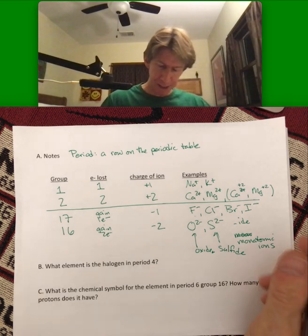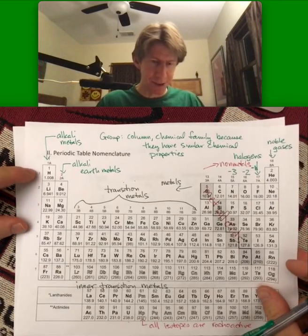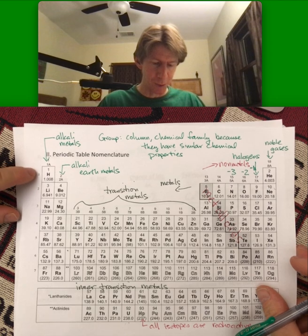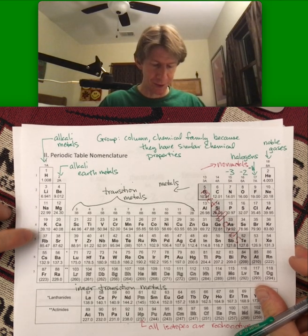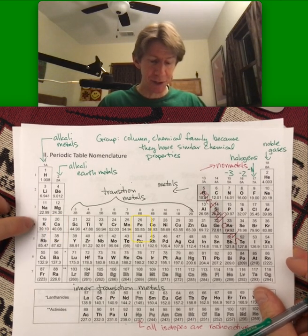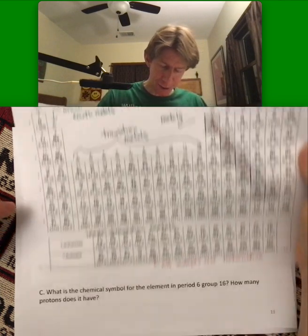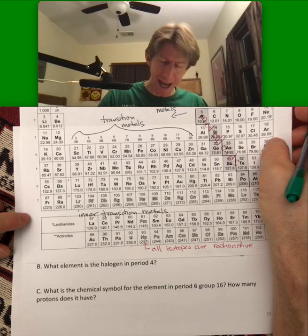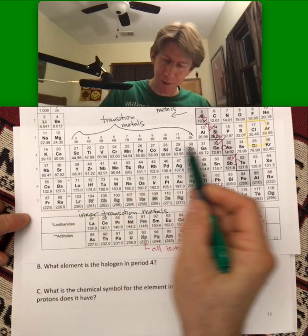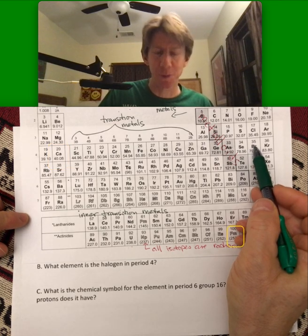And the period number is listed right here. So period one, two, three, four, five, six, seven. Period four is this row right here. And let's see what the question was. What element is the halogen in period four? So period four, all the way over here, that's going to be bromine.